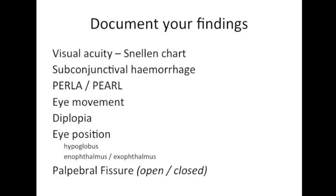It is essential to document these findings. Visual acuity must be recorded using a Snellen chart. Relative position of the eyes should be recorded and whether or not they are reactive to light — PEARL or PEARLA are acronyms meaning pupils equal and reactive to light. The palpebral fissure is the anatomical name for the separation between the upper and lower eyelids; you should record whether it is normal, decreased, or closed.